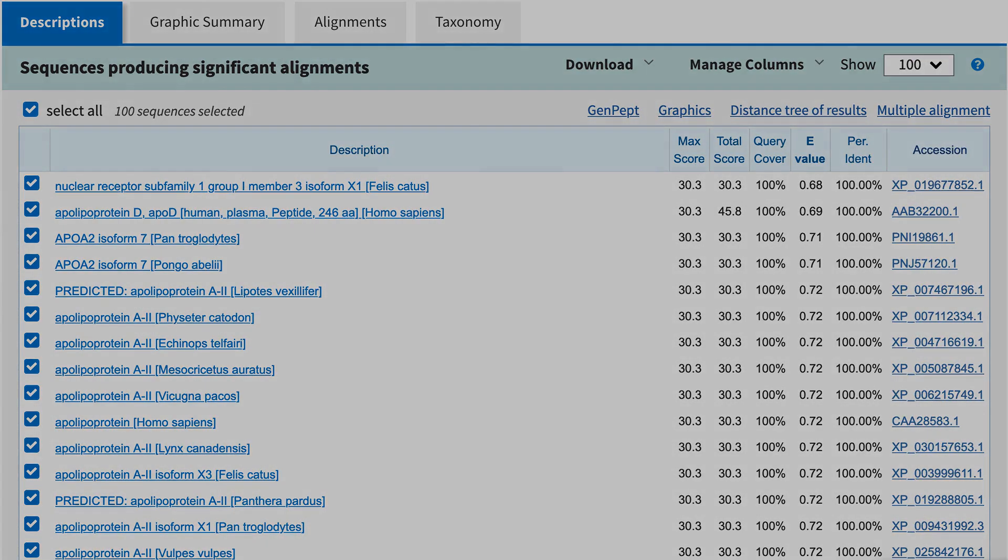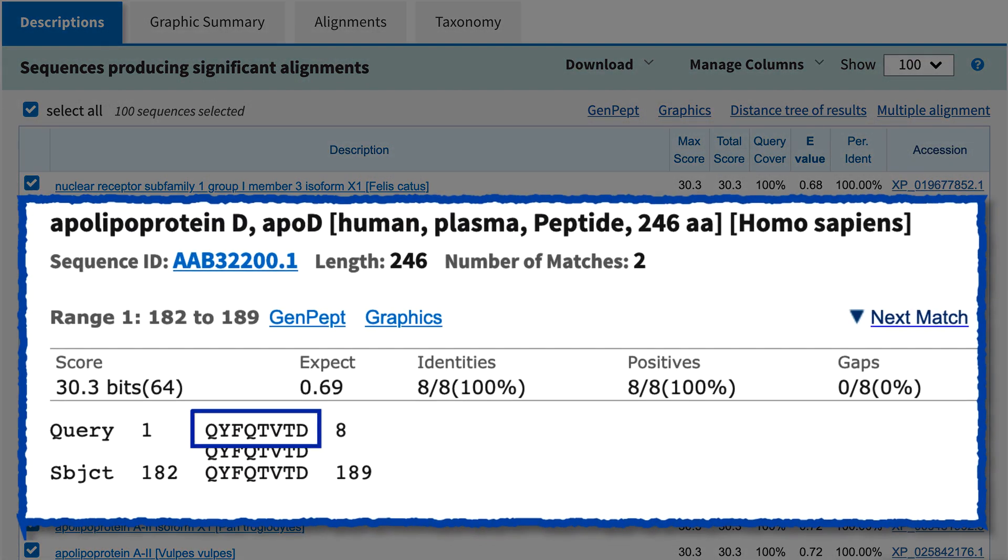But what if you search a large database with, say, an 8 amino acid query? The best alignment you can get is 100% identical over 8 residues, and that is likely to have an E-Value around 1 or much higher.